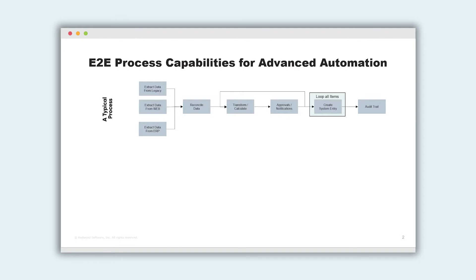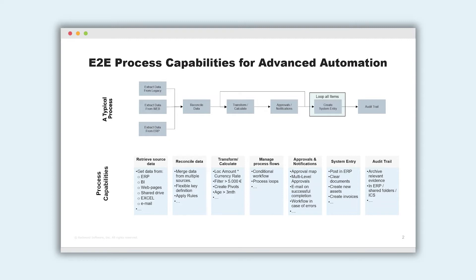After the approval processes, the data is typically put back somewhere — either posted to an ERP system again, or appropriate entries are created elsewhere until the data is processed successfully. Last but not least, an audit trail has to be created to show what the activities were, the evidence, and the results. Those are also the seven types of tasks to be performed when we want to completely automate a finance process.